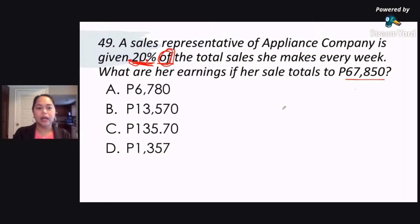So that would be 0.2. Okay, so we just multiply $67,850 by 0.2. Okay, so your answer would be $13,570. That would be letter B.